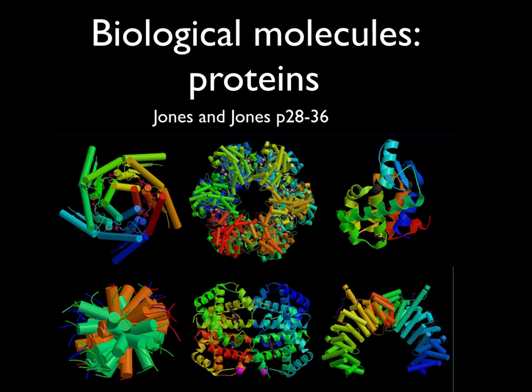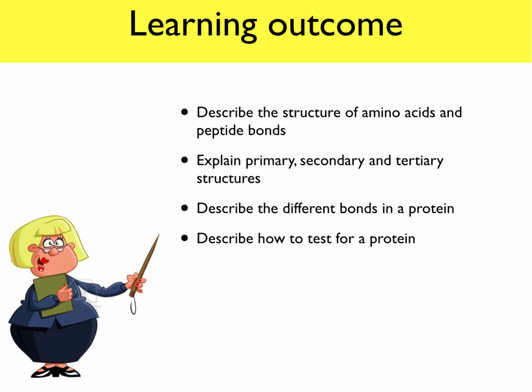In this topic we're going to look at proteins — amino acids, polypeptides and the structure of proteins. By the end of this lesson you'll be able to describe the structure of amino acids and peptide bonds, explain primary, secondary and tertiary structures, describe the different bonds in a protein, and we're also going to look at how to test for a protein.